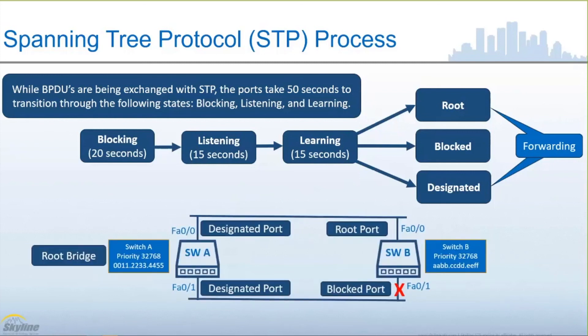Once all the timer processes have taken place, switch A becomes the root bridge. Both of switch A's ports go into a designated state, meaning they are forwarding traffic for any particular VLAN in the architecture. Switch B transitions FastEthernet00 into a root port designation — also a forwarding port — and leaves FastEthernet01 in a blocked state to prevent loops within the switch architecture.